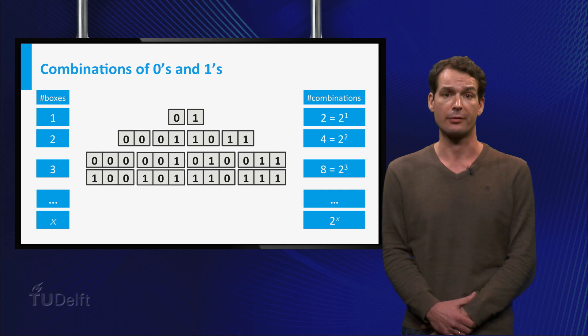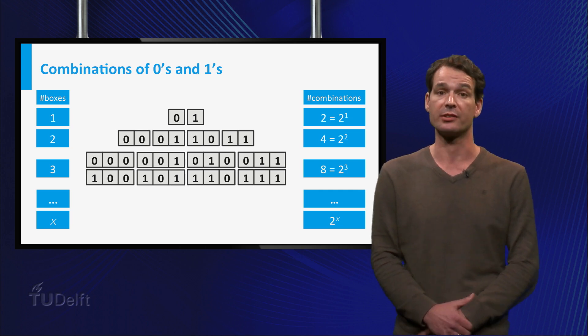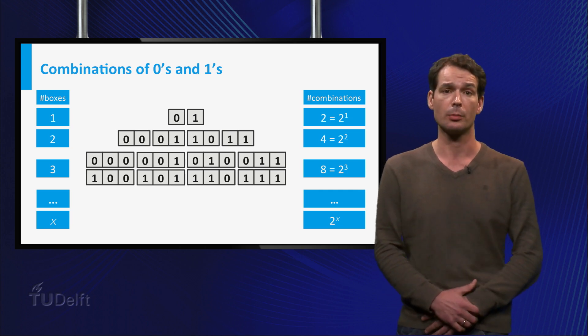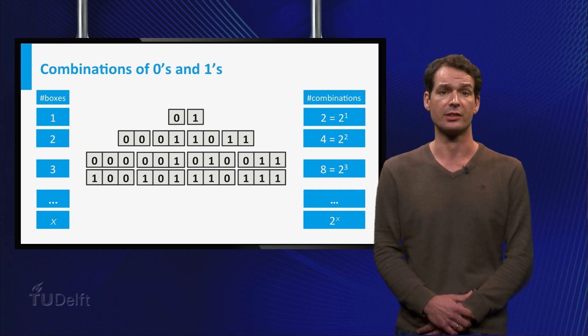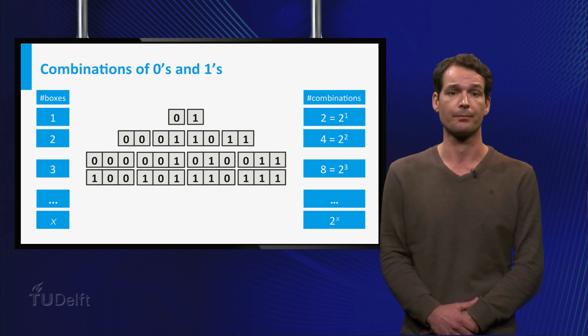In general, if we have x boxes, we can make 2 to the power x combinations, so the number of combinations is given by an exponential function.